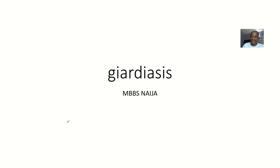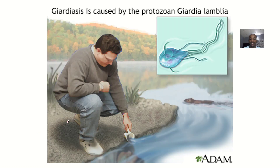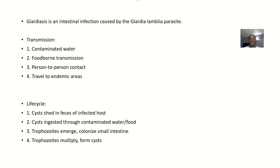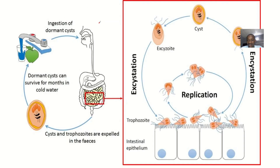We're looking at the Giardiasis infection, caused by an organism known as Giardia lamblia. From this image you can see a man randomly trying to get water from a stream — one of the ways of getting this infection is by taking contaminated water. Giardiasis is an intestinal infection caused by the Giardia lamblia parasite.